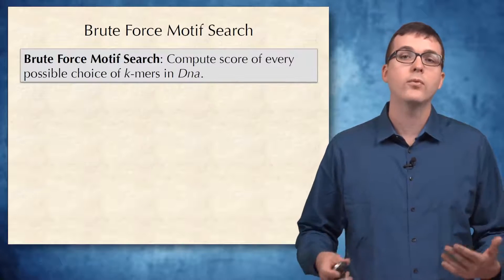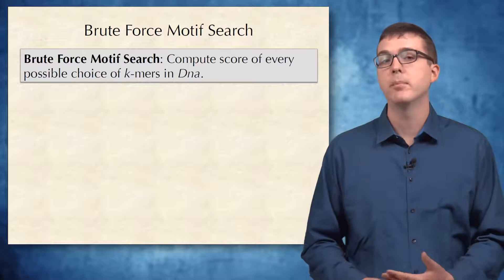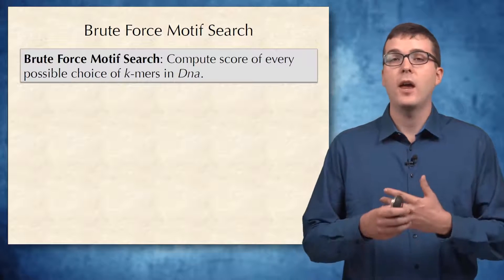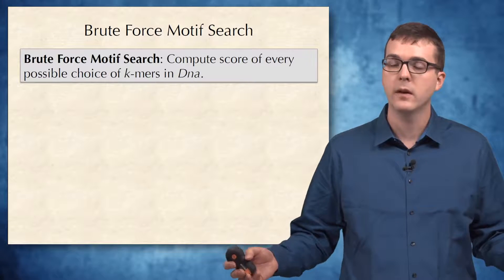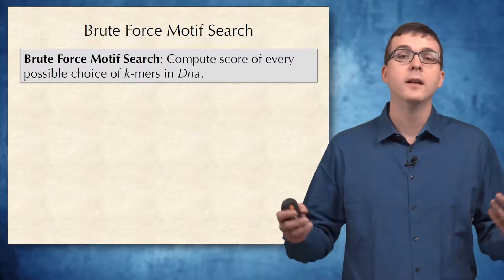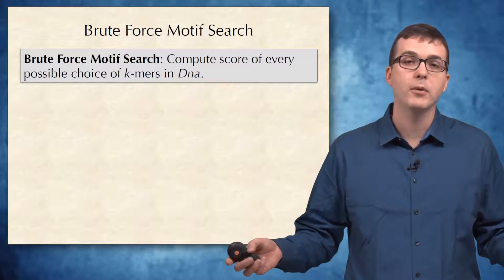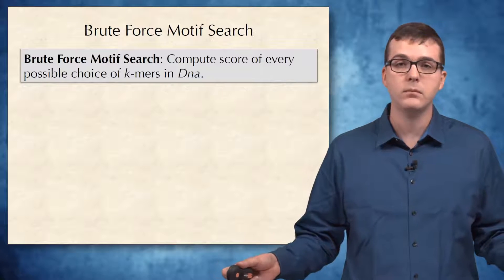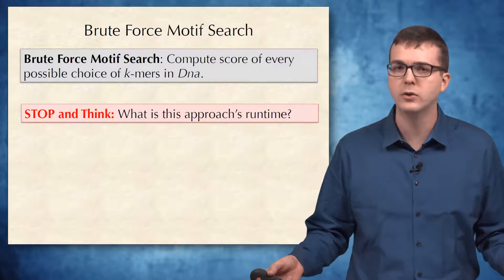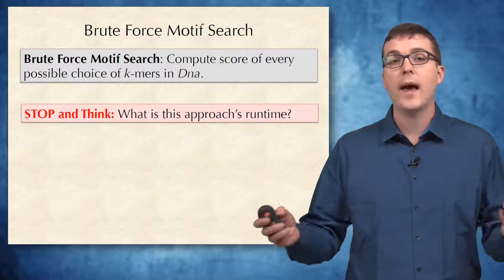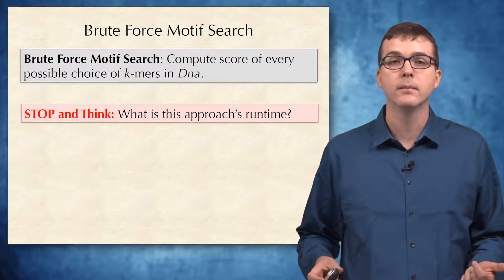A brute force algorithm for the motif-finding problem would simply consider every possible choice of K-mers to form a motif matrix, and then take the collection of K-mers having the lowest score. But as with any brute force approach, we need to ask ourselves how fast this algorithm is.